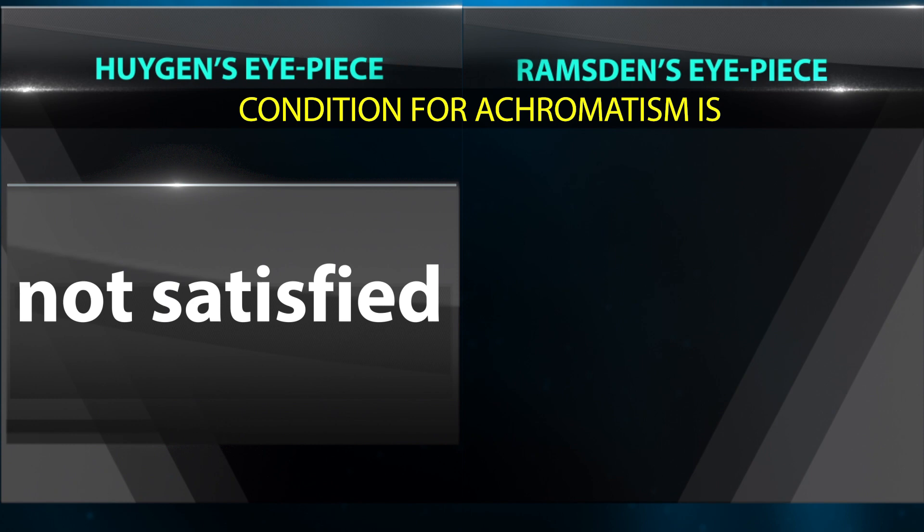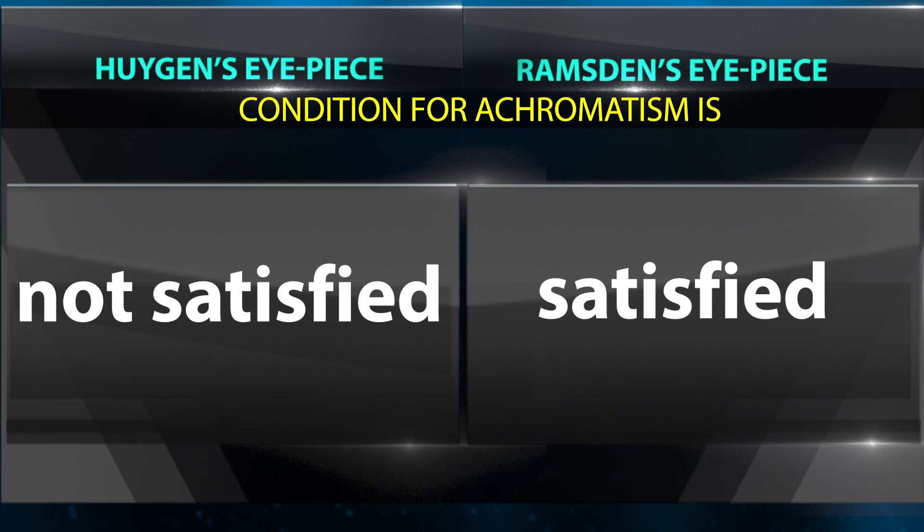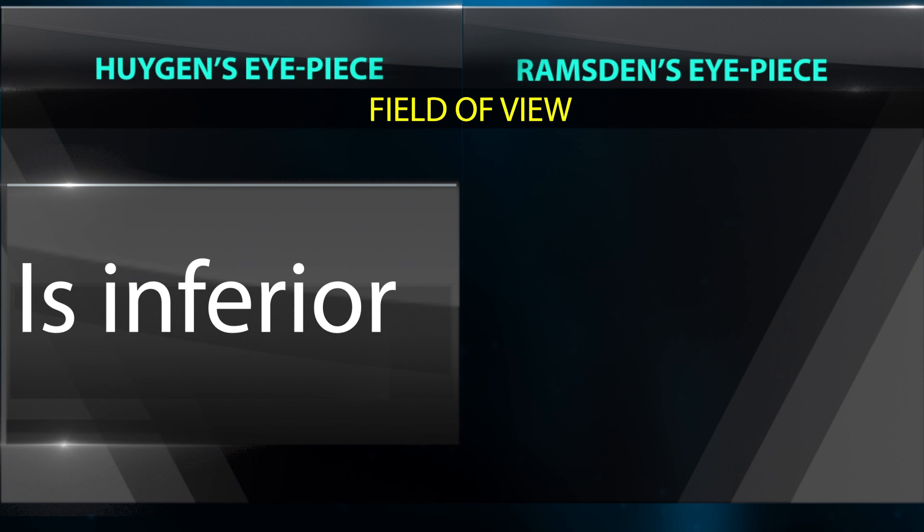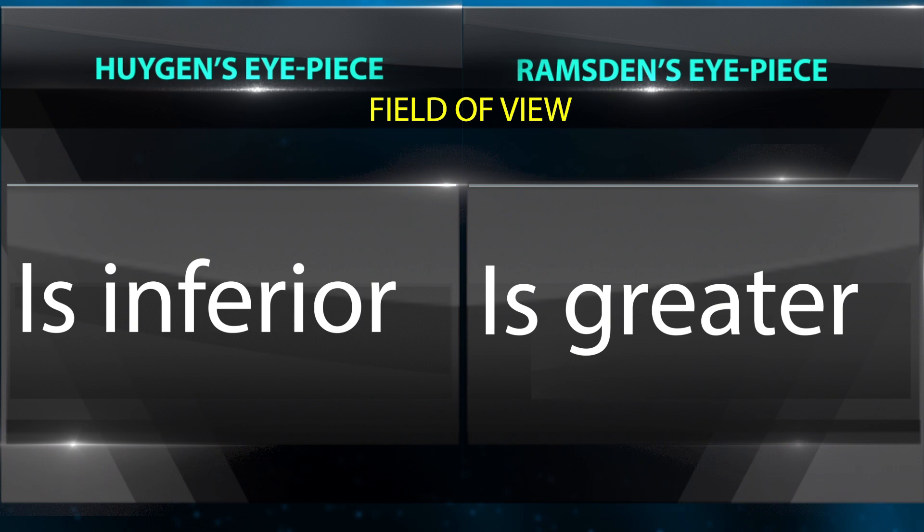Condition for achromatic aberrations: in the Huygens eyepiece, the condition is not satisfied. In the Ramsden eyepiece, the condition is satisfied. Regarding field of view: the Huygens eyepiece has an inferior field of view, while the Ramsden eyepiece has a greater field of view.